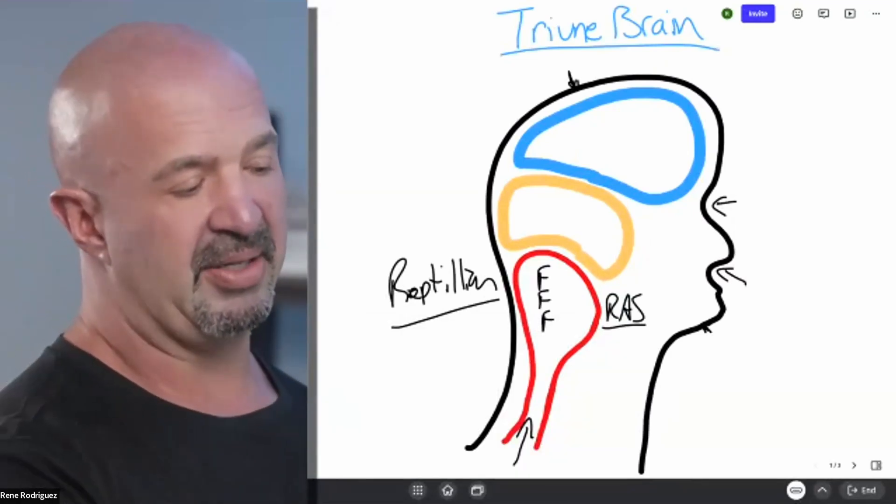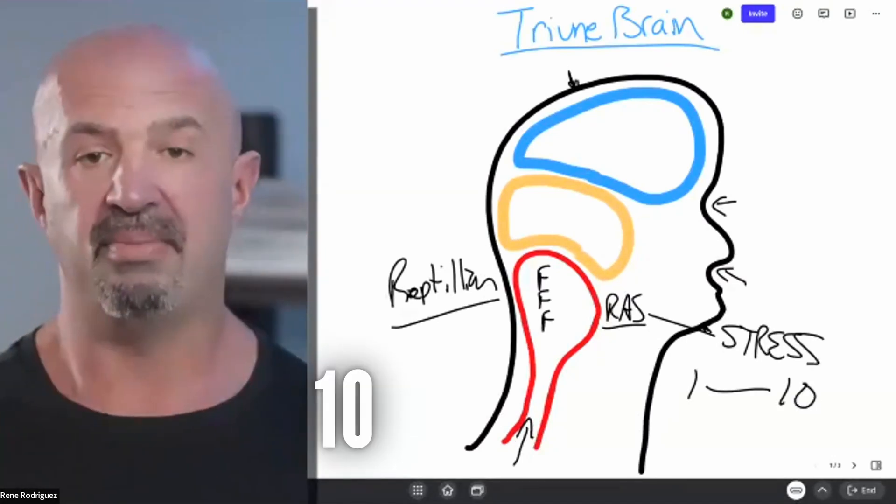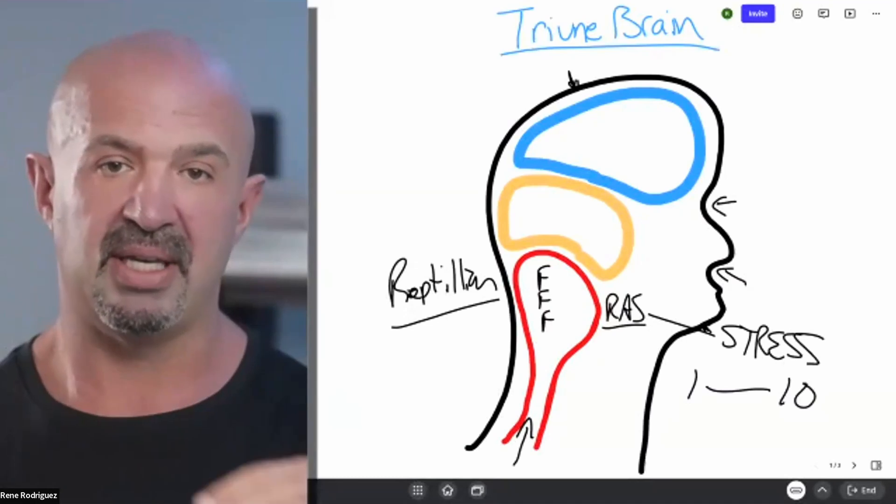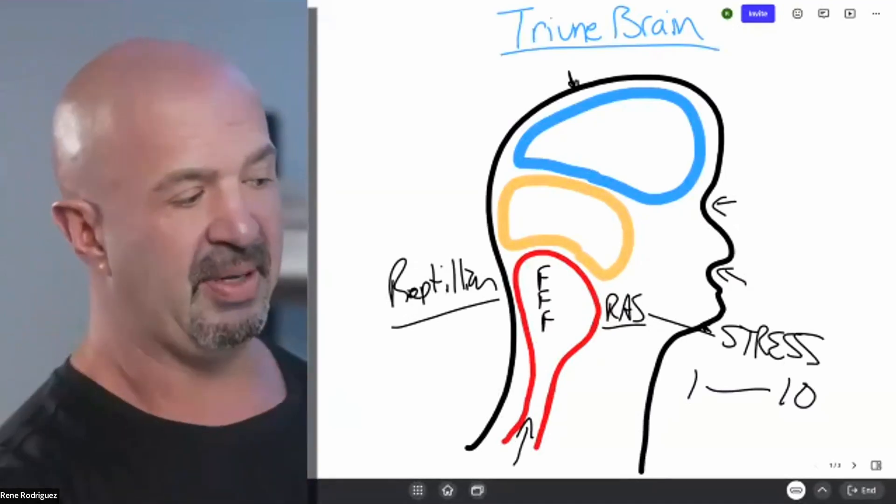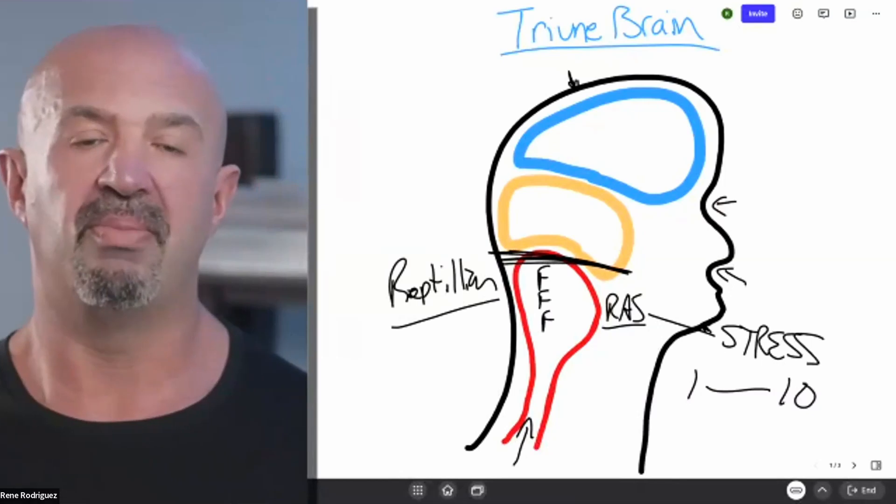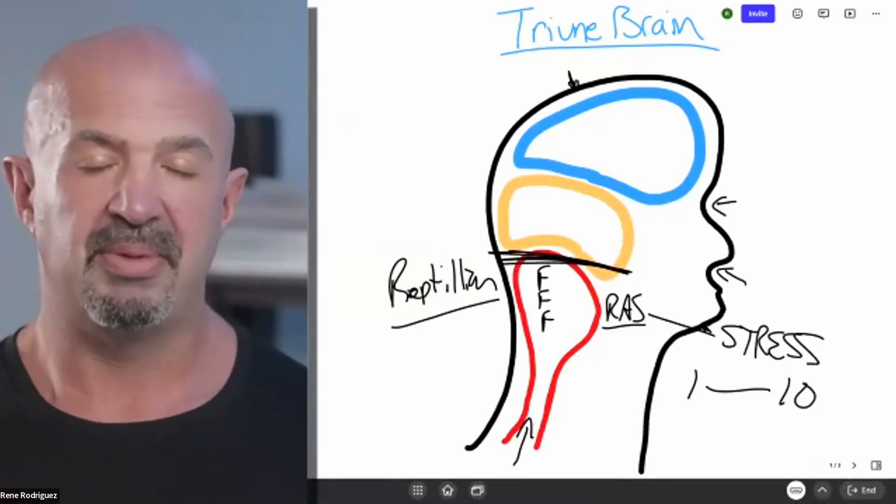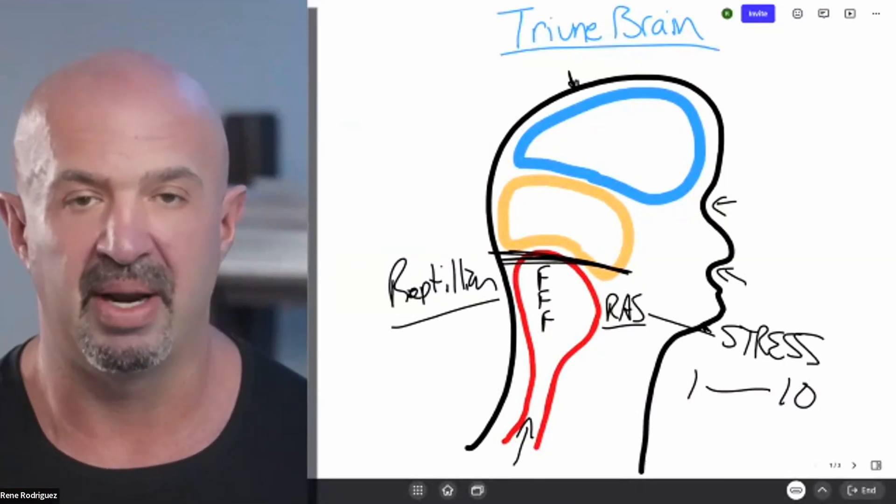The reticular activating system actually looks at stress. It measures stress on a scale of one to ten. And ten being death, if it measures a level ten death stress, it has the ability to shut off cortical access to anything higher in the brain. All sugar is now beginning to be metabolized at our primitive level.